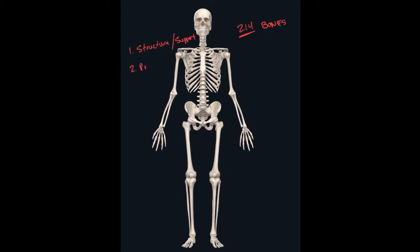The second major function is protection. The skeletal system covers up lots of vital organs. We have our heart within our thoracic cage protected by our ribs, and our brain is surrounded by the bones of the skull. There are a lot of different organs protected by the skeletal system. The last major purpose is that it's responsible for body movement — with skeletal muscles together they allow us to have range of motion along with our joints. So those are the three major functions: structure, protection, and body movement.